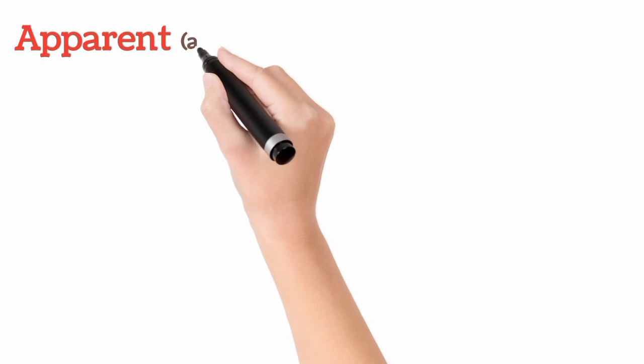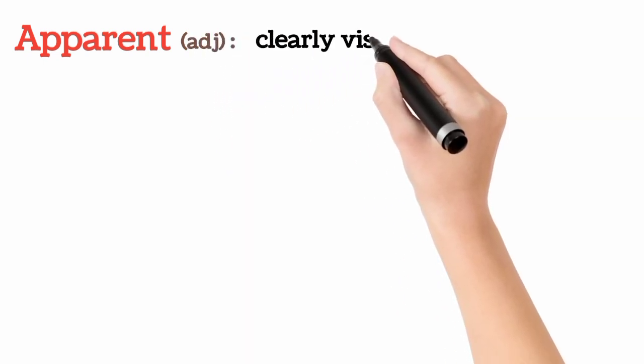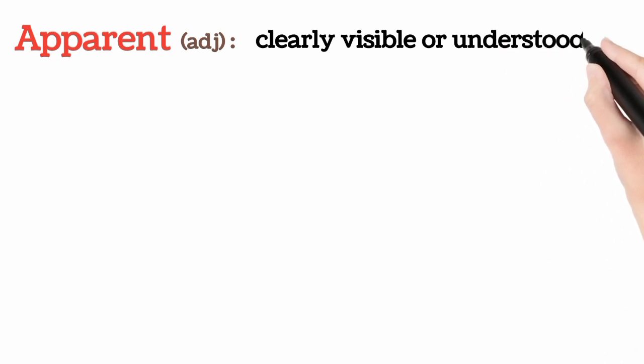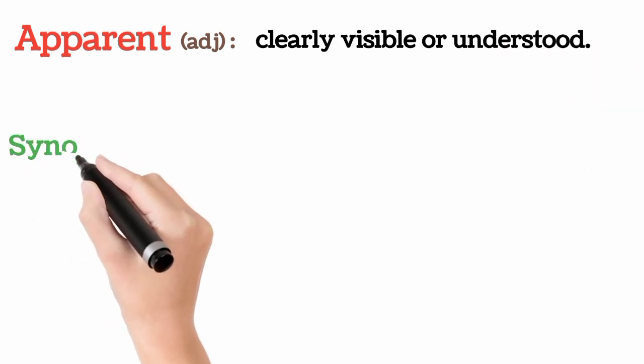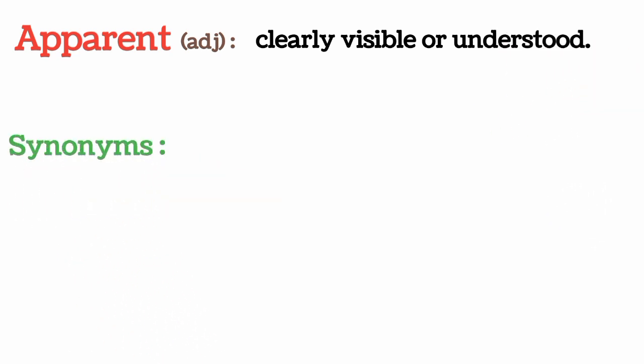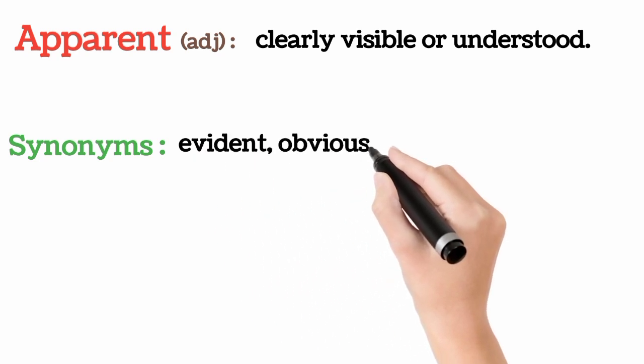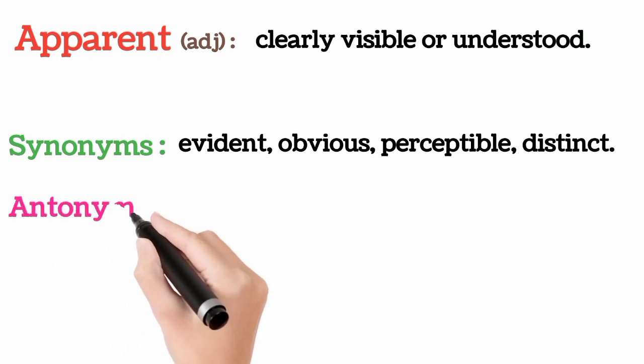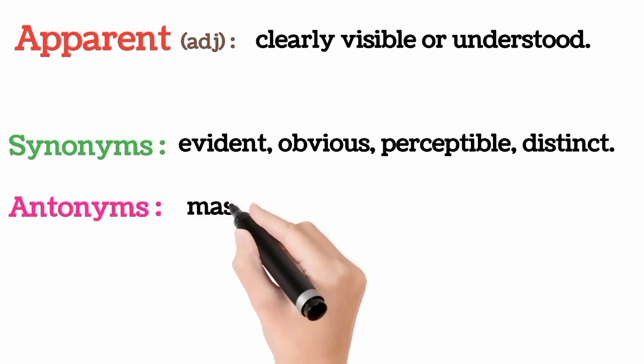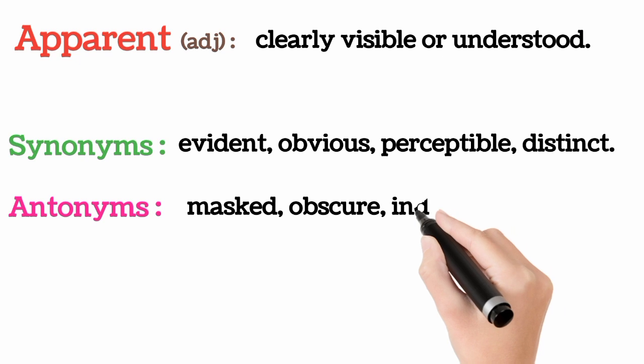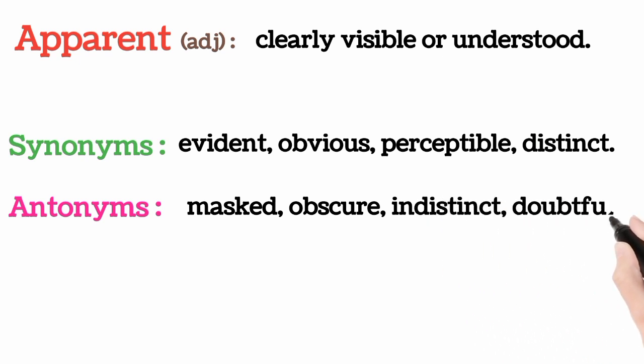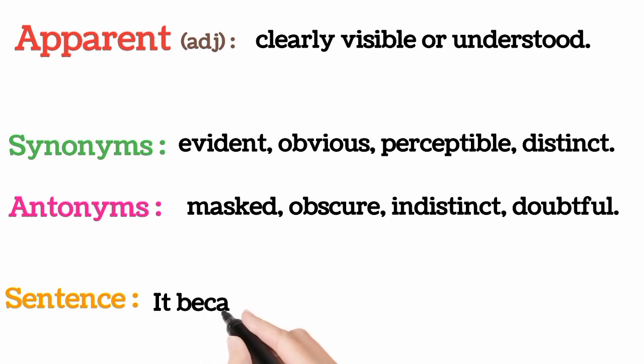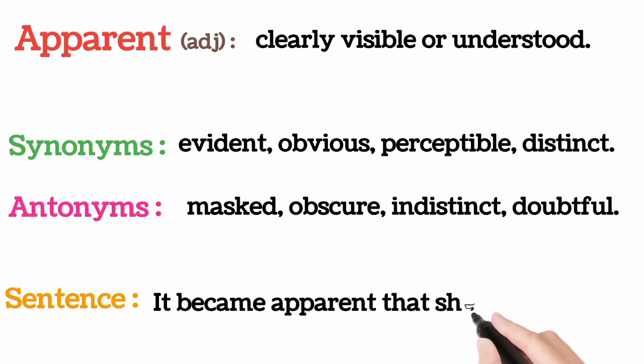Apparent, it's an adjective, which means clearly visible or understood. Synonyms: evident, obvious, perceptible, distinct. Antonyms: marked, obscure, indistinct, doubtful. It became apparent that she was talented.